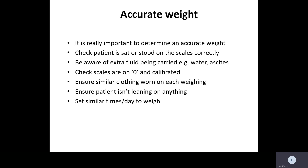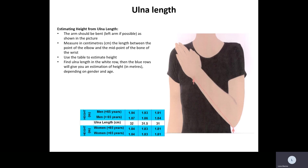It's really important to determine an accurate weight, and while it sounds simple, lots of mistakes are made. You need to ensure the patient is stood on the scales correctly, not with one foot on the floor. Be aware of extra fluid such as ascites. Check the scales are zeroed and calibrated, ensure similar clothing is worn at each weighing, make sure the patient isn't leaning on anything, and set similar times each day. Ulnar length — the bone between elbow and hand — can be used to estimate height, measuring in centimetres and using a reference table. This is useful for patients who are bed-bound and can't stand.